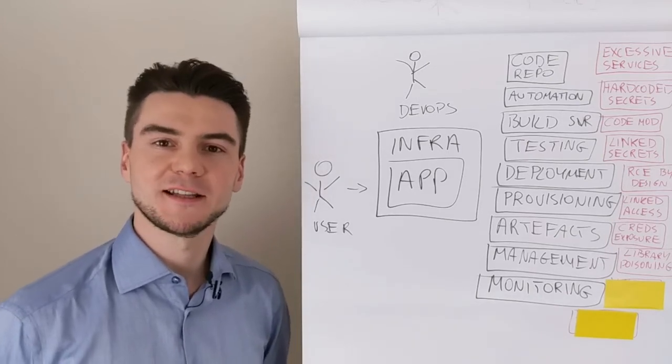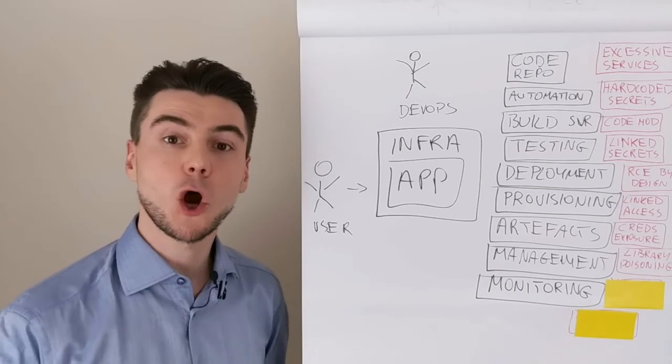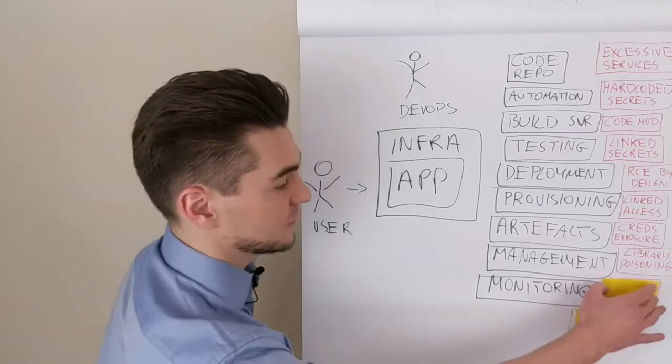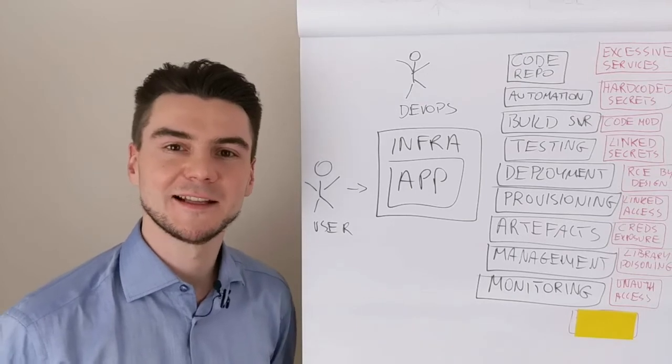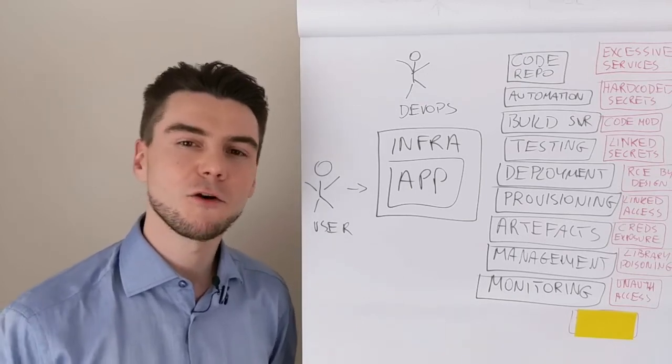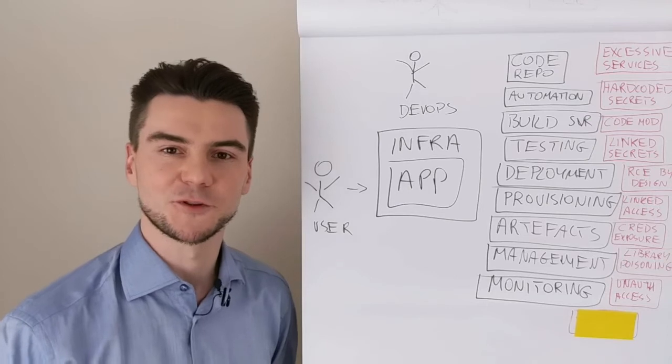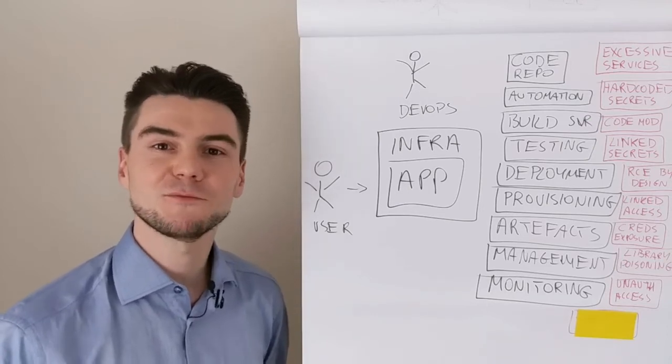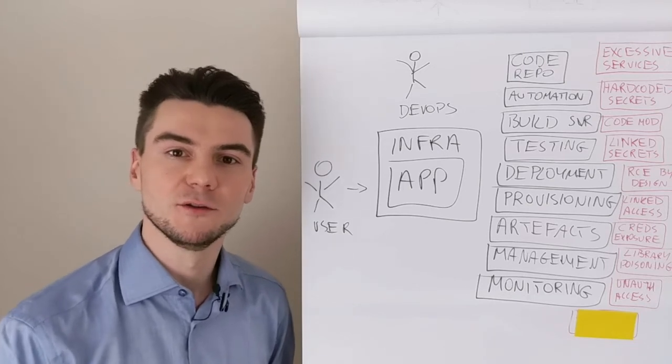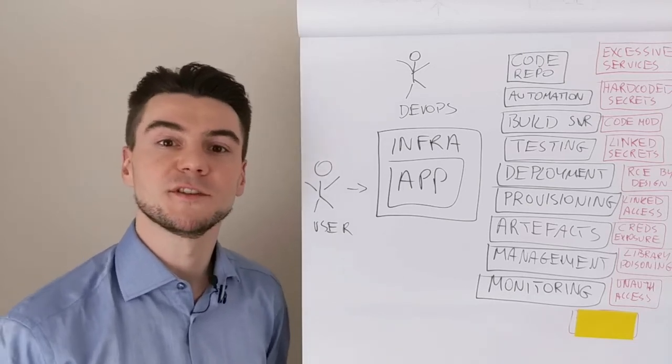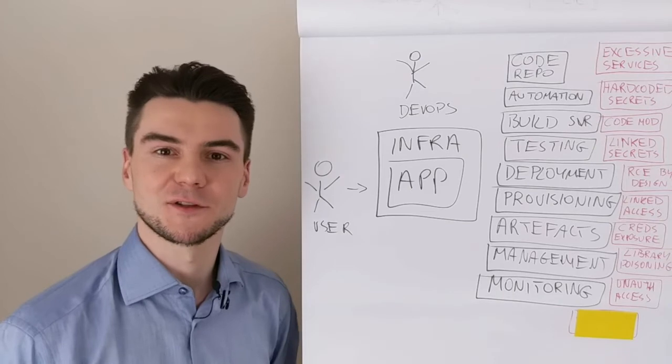Once we scanned the external attack surface of one company and found OpenShift, a management software with a default password. The boxes themselves had all security settings, long passwords, no external network interface, but we could manage them remotely from the internet, turn them off, execute arbitrary code, or even establish a reverse shell directly in the OpenShift console.